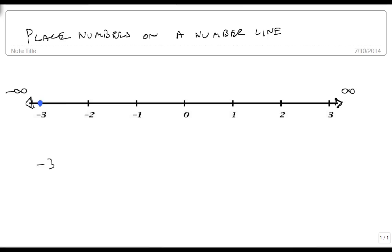We could also do 2 fifths. Well, 2 fifths is less than 1. In fact, if we were to break this up into 1, 2, 3, 4, 5 even pieces, 2 fifths would be right there. So there's our 2 fifths, just like there's our negative 3.